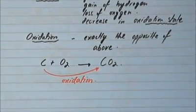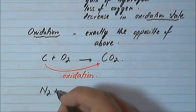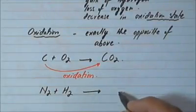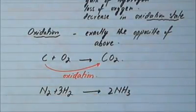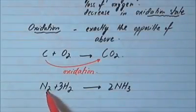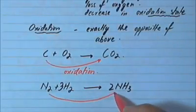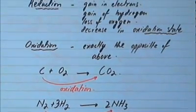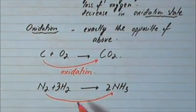Here is another reaction: nitrogen reacting with hydrogen to produce NH₃ — let's balance this equation. If you look carefully, nitrogen had no hydrogen atoms on the left side but has three hydrogen atoms on the right side. So nitrogen has gone from having no hydrogen to gaining hydrogen atoms. A gain of hydrogen is considered reduction, so nitrogen got reduced.